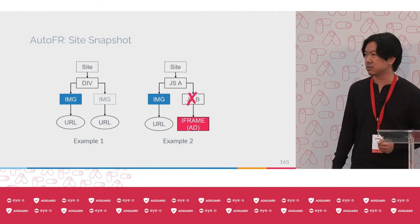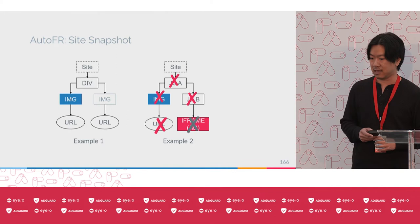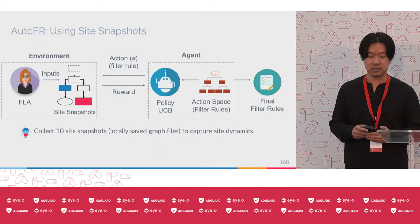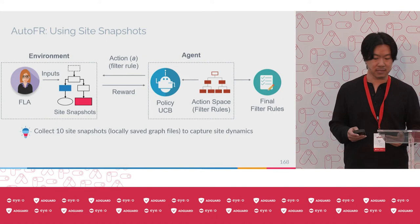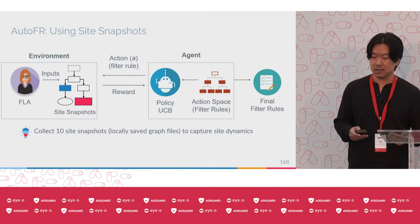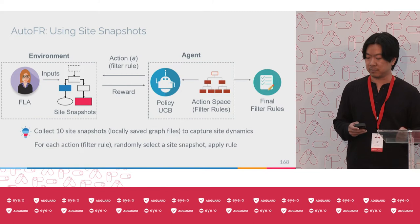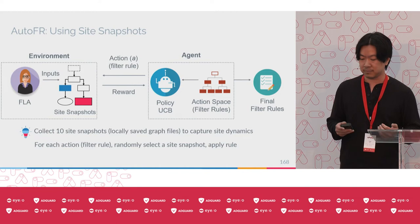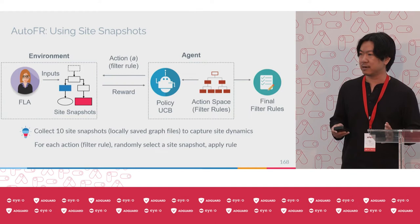We replace the browser with a set of site snapshots. We collect 10 site snapshots by visiting the site for real, to capture site dynamics. These are locally saved as GraphML files. For each action where we apply a rule, we randomly select from the set of 10, read it into memory, and apply the rule in a post-processing manner. This reduces the required number of site visits from hundreds or thousands down to a fixed number of 10.